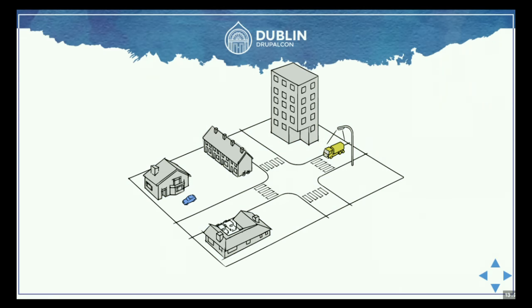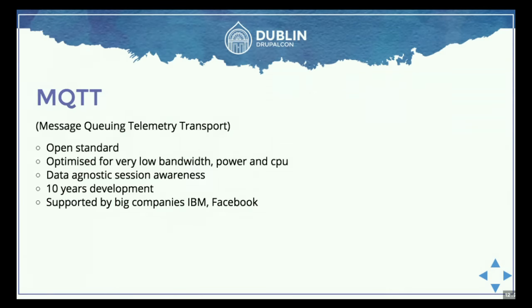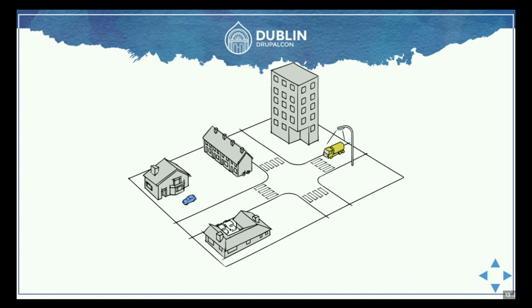In summary, we've seen that we have some city planning with open data from the government on top of that. We can place sensors in the buildings as well as in the environments. Combining those, we can give the next level of web systems insight into what is actually happening and how we can improve our own world and each other's world.